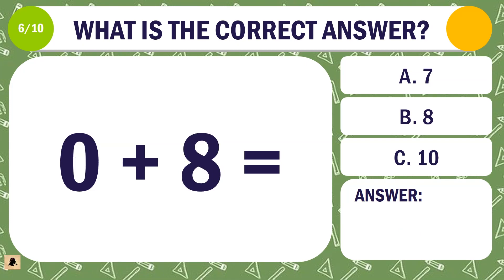Question 6. What is the correct answer for 0 plus 8? A. 7. B. 8. Or C. 10.